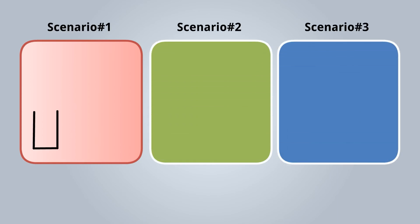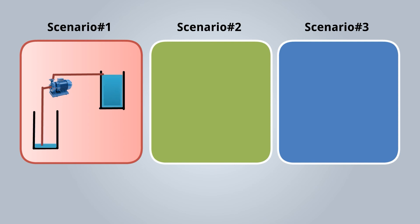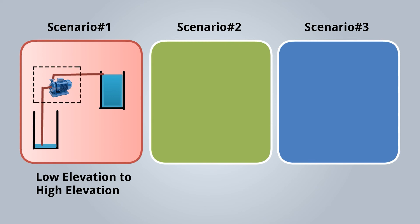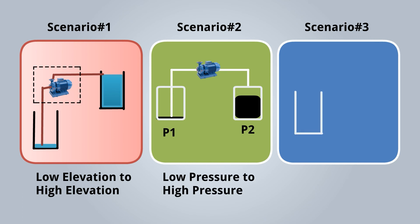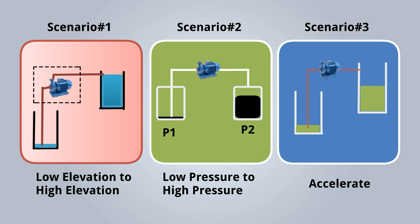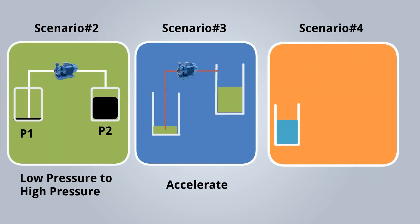Now let's understand how a pump addresses all these scenarios. Scenario 1: With the help of a pump, we can transfer fluid from tank 1 to tank 2 even with an elevation difference — fluid transfer from low elevation to high elevation is possible. Scenario 2: We can transfer fluid from a low pressure zone to a high pressure zone with a pump. Scenario 3: We can accelerate the fluid transfer with a pump whenever required.